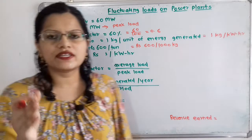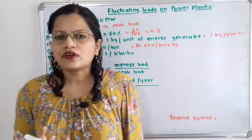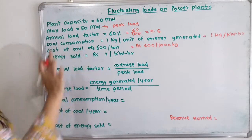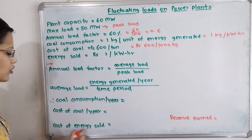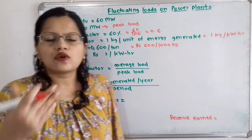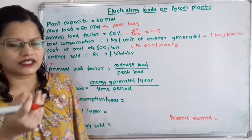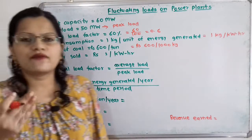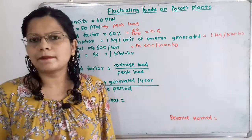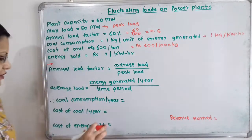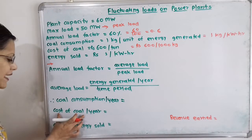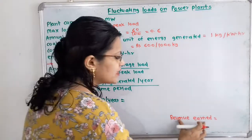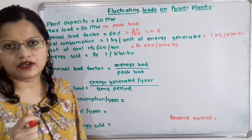Now we have to find out what is the revenue earned. For that we have to first find out the cost of coal per year and the cost of energy sold. Cost of coal is the cost we have to pay, while cost of energy sold means we will receive money. So revenue earned equals cost of energy sold minus cost of coal.